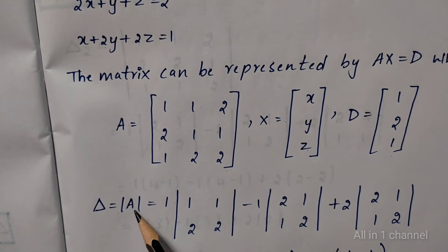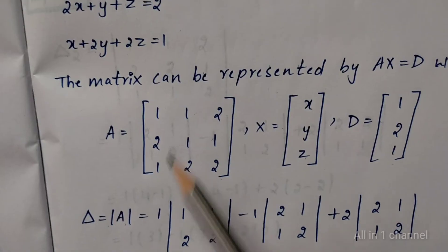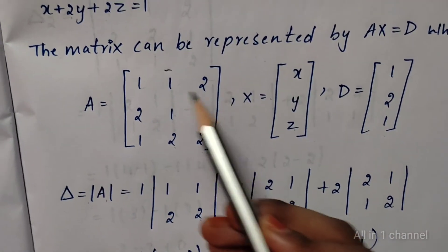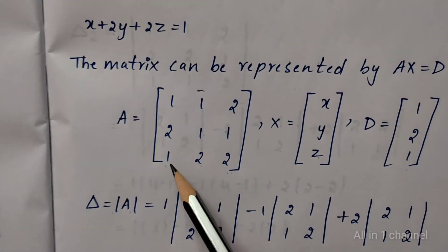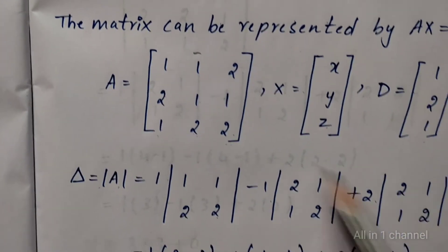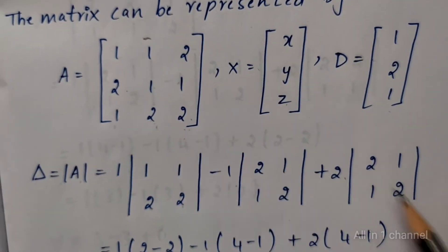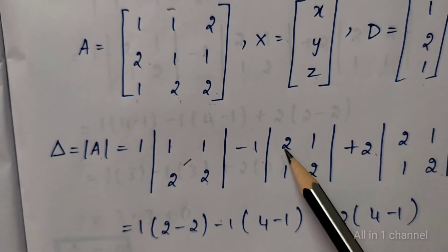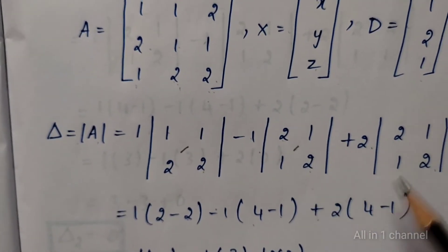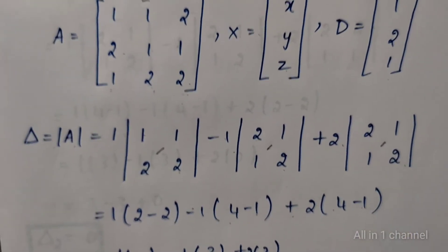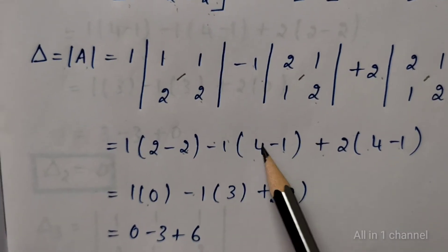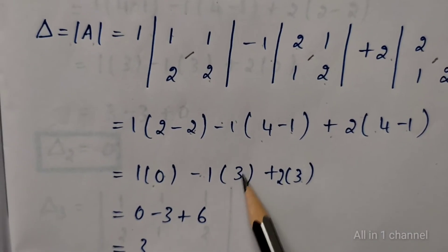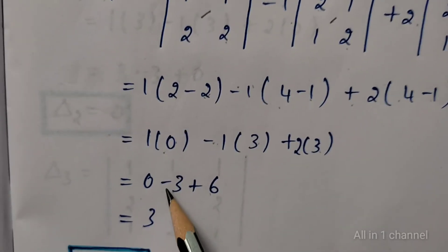Delta equal to det A. Computing: 1 into delete first row and first column: 1, 1, 2, 2. Minus 1: delete first row and second column: 2, 1, 1, 2. Plus 2: delete first row and third column: 2, 1, 1, 2. 1 into 1 into 2 equals 2; 2 into minus 1 equals minus 2. Minus 1: 2 into 2 equals 4; 1 into minus 1 equals minus 1. Plus 2: 2 into 2 equals 4; 1 into minus 1 equals minus 1. 1 into 2 minus 2 equals 0, minus 1. 4 minus 1 equals 3. Plus 2 into 4 minus 1 equals 3. 1 into 0 equals 0, minus 1 into 3 equals minus 3, plus 2 into 3 equals plus 6, so minus 3 plus 6 equals 3.